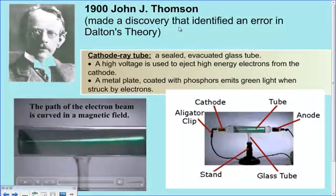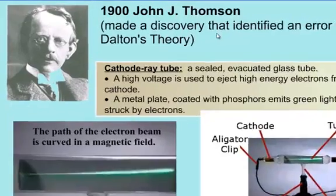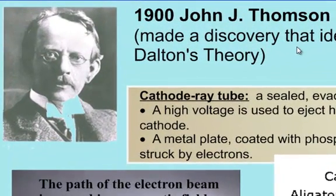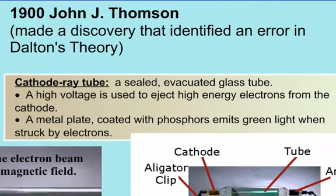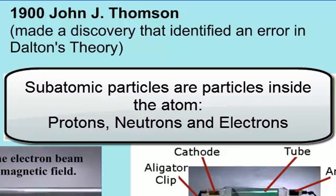Now we're in the early 1900s. J.J. Thompson was a professor, and he identified an error in Dalton's theory. We're going to start getting into scientists that are discovering subatomic particles. Subatomic means inside the atom — subatomic particles: protons, neutrons, and electrons.